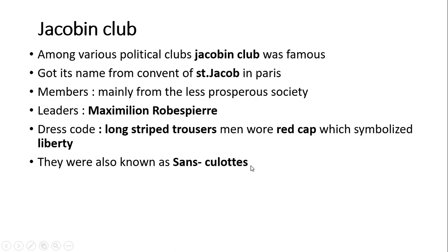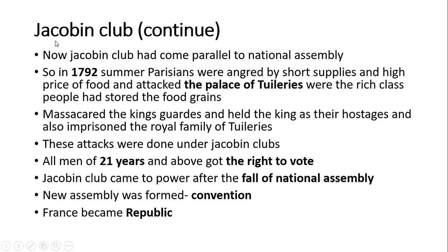They were also known as sans-culottes. The Jacobin Club grew parallel to the National Assembly. In the summer of 1792, Parisians were angry at the short supply and high price of food, and attacked the palace of the Tuileries, where the rich class had stored food grains. They massacred the king's guards, held the king as hostage, and imprisoned the royal family. These attacks were done under the Jacobin Club. All men of 21 years and above got the right to vote, and a new assembly called the Convention was formed. France became a Republic.